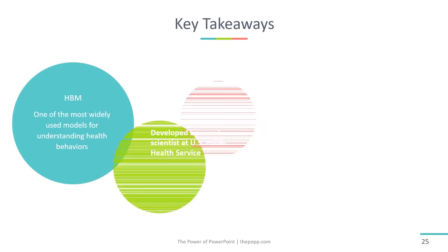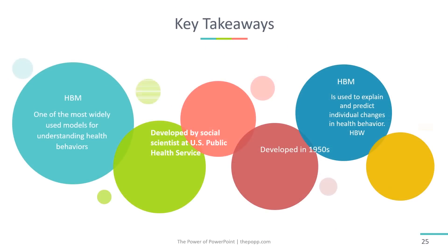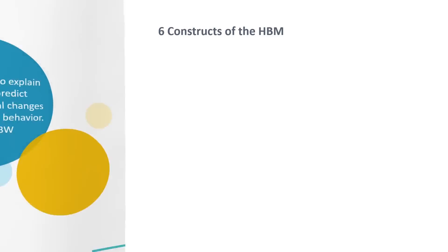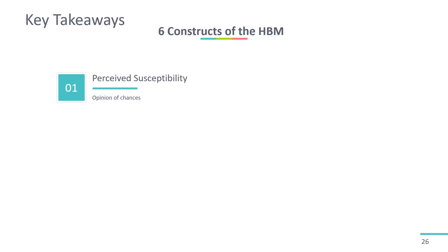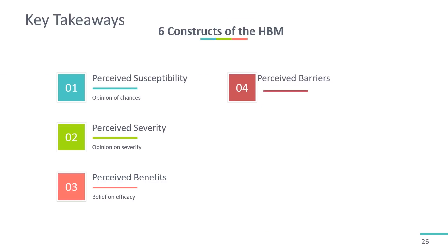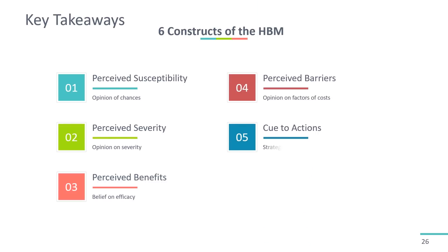Here are the key takeaways of the lesson. The Health Belief Model is one of the most widely used models for understanding health behaviors. It was developed in the 1950s by social scientists at the U.S. Public Health Service. The Health Belief Model is used to explain and predict individual changes in health behaviors, and it has six constructs: perceived susceptibility, perceived severity, perceived benefits, perceived barriers, cue to action, and lastly, self-efficacy.